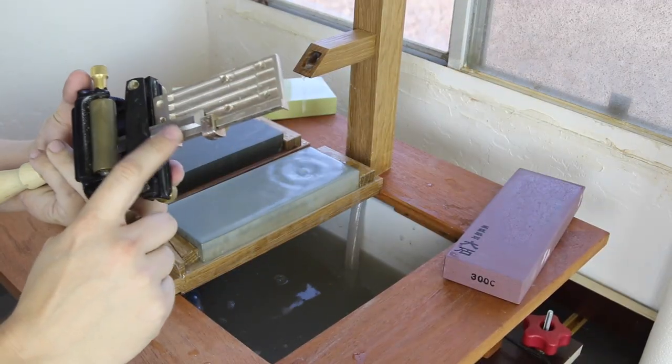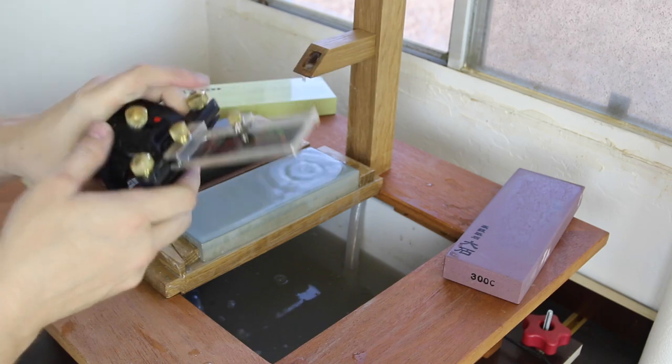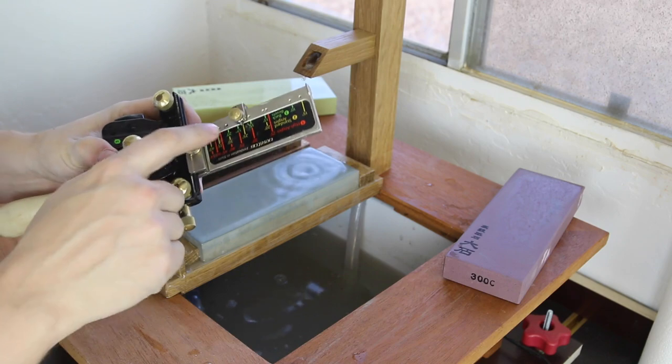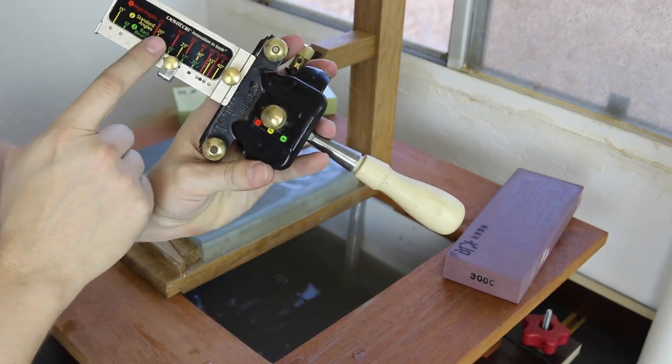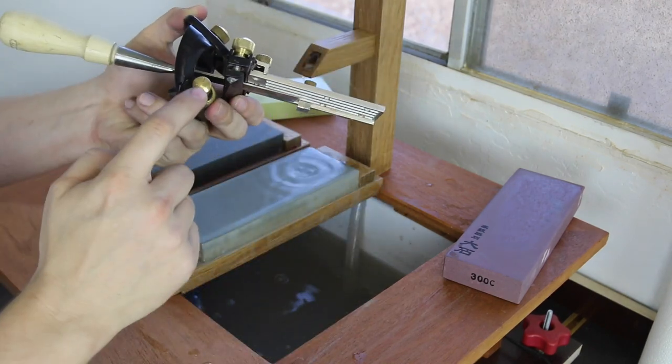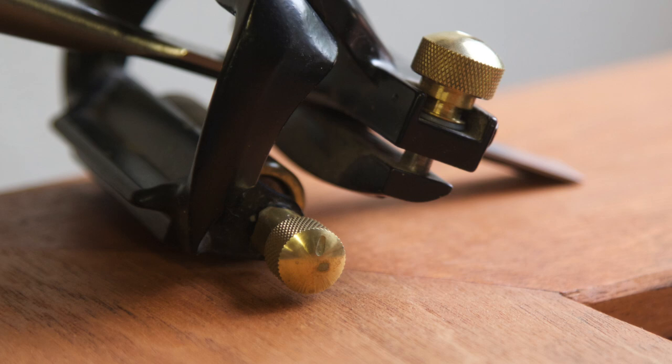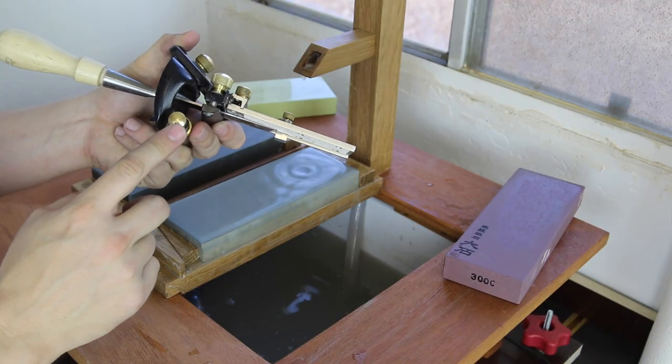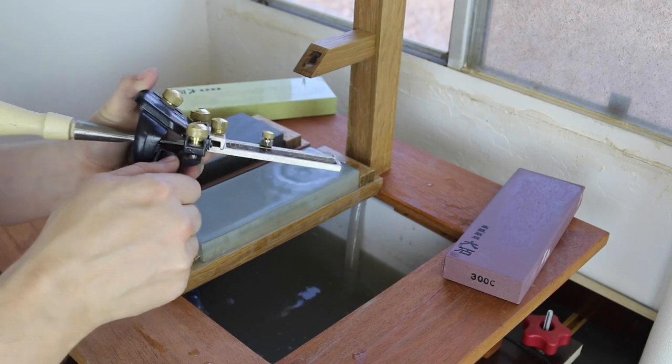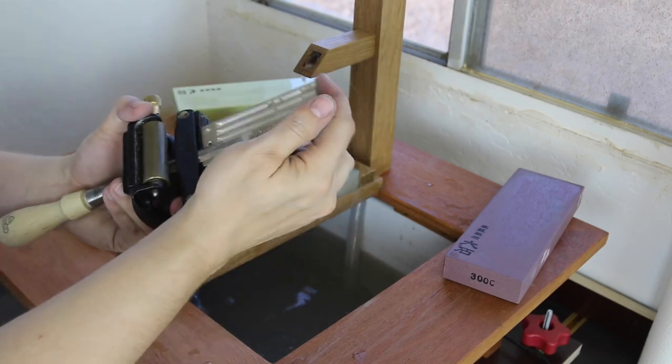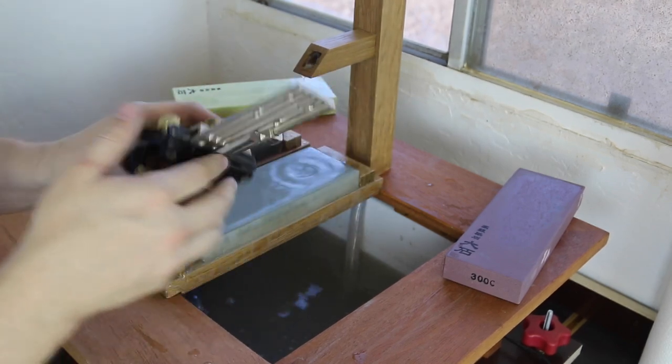Okay, now it's time to grind a new bevel on this chisel. I have the chisel in my Veritas Mark II honing guide, and I've set it for a 25 degree angle. I also have the little pointer here pointing up. When you take it and point it down, you change the angle by about two degrees. That's what we're going to actually hone at, but we'll do that after we grind a new bevel. Once this guy is locked in and it's nice and square, I can take that off.